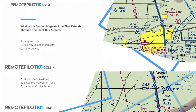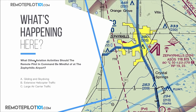Let's look at one more. What other aviation activities should the remote pilot in command be mindful of at the Zephyr Hills Airport? Here's the town of Zephyr Hills, and here's the Zephyr Hills Airport. I don't see anything fancy airspace-wise — looks like some Bravo going through but it's outside of the Bravo. What's happening at Zephyr Hills? Is it gliding and skydiving, extensive helicopter traffic, or large air carrier traffic? Just to the right of Zephyr Hills you'll see a little parachute showing skydiving activities, and a sailplane with a G above it meaning gliding activity.